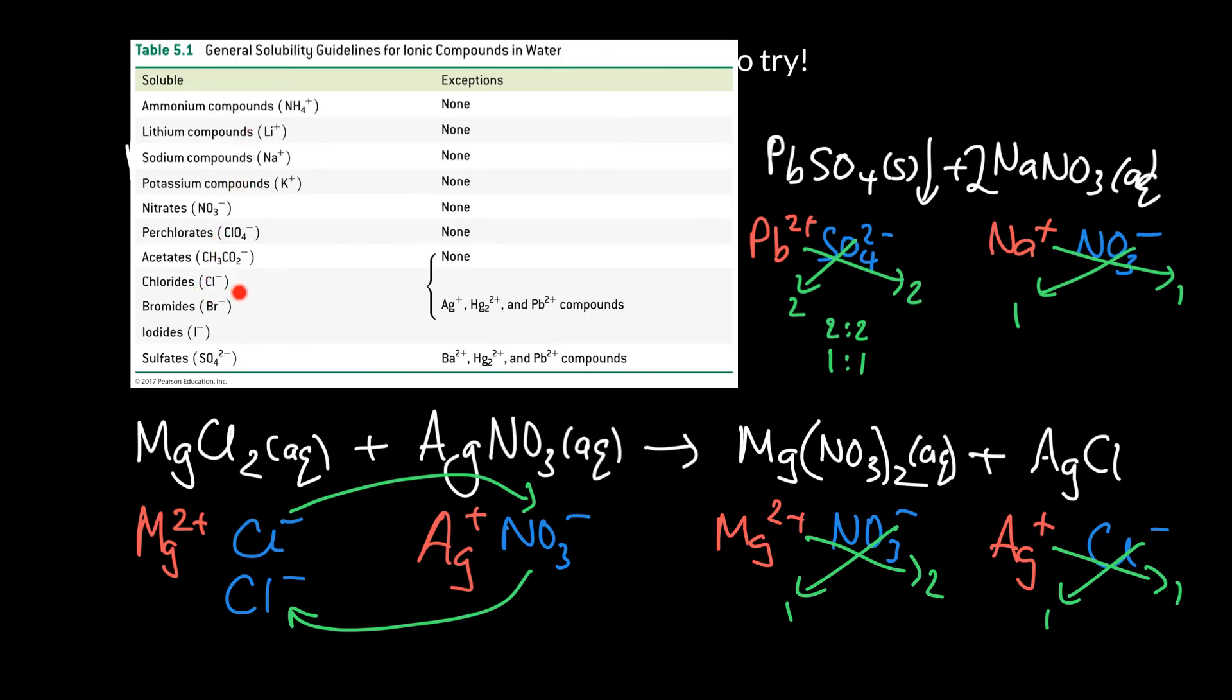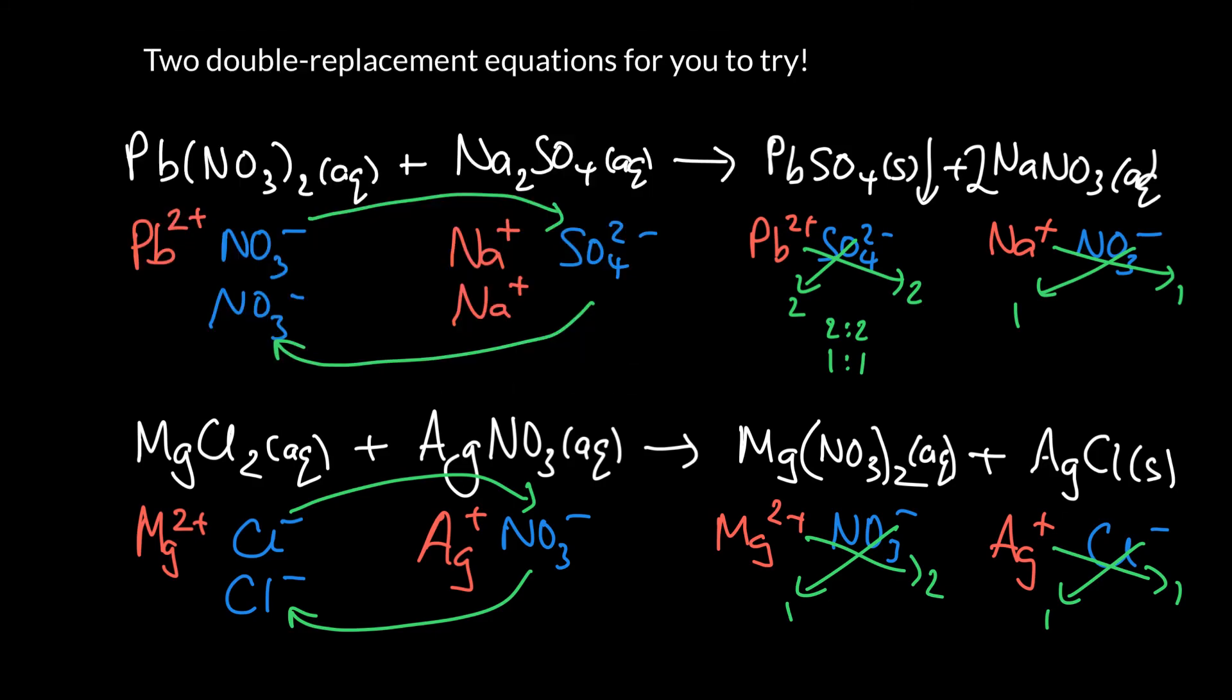Silver chloride, chloride's right here. So is soluble unless you're paired up with silver, which it is. And so then we would write S there. S telling us that it does not dissolve. So it is a solid. Almost all ionic compounds are solids.